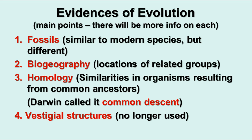The four main evidences for evolution are: fossils, which are similar to modern species but different; biogeography, that is the locations of related groups of organisms in different parts of the world; homology, which refers to similarities in organisms that have common ancestors — Darwin called this common descent; and vestigial structures, things that organisms still have but that are no longer used. Let's look at each one in turn.